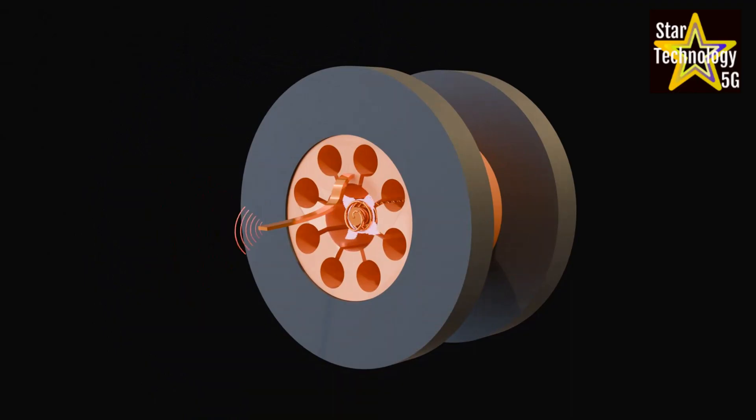The antenna is connected to one of the cavities, and it will create microwaves.